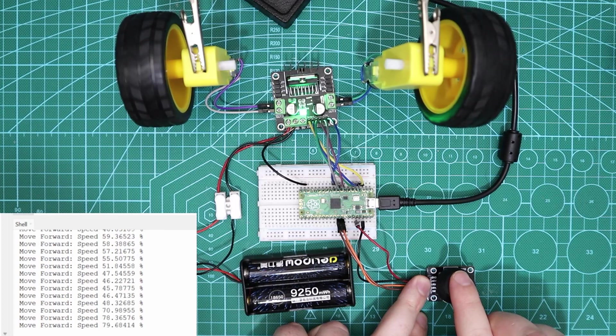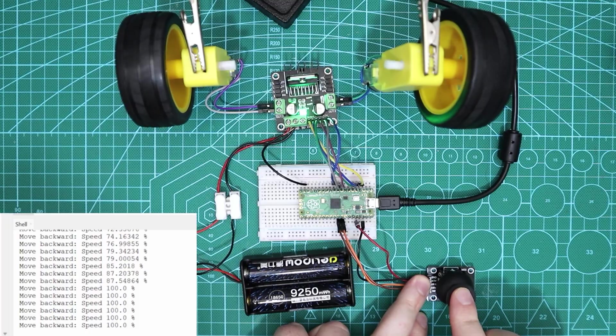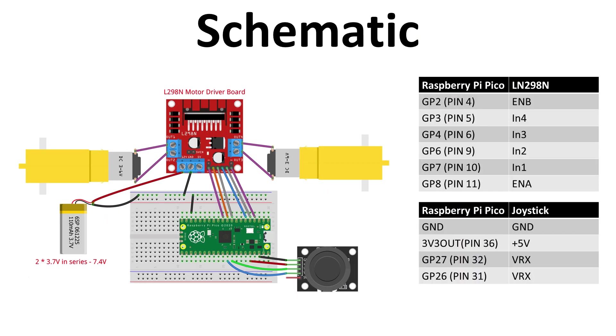In the last example we will use the thumb joystick to control the direction of the motor and the speed using PWM. Add the joystick to your circuit as shown in the schematic diagram and open example 2 in the GitHub repository.